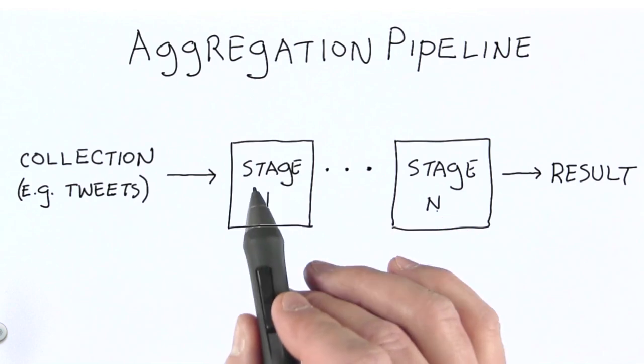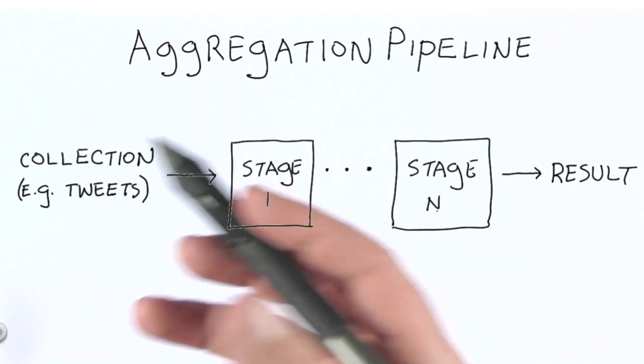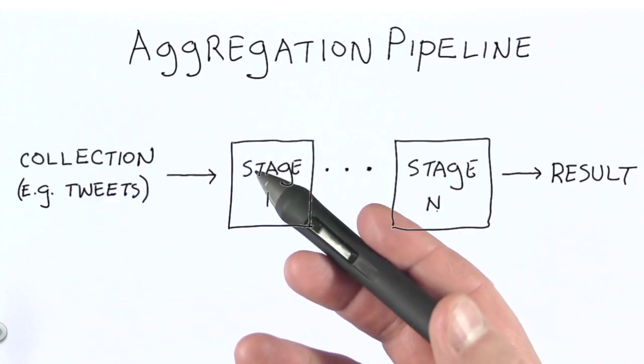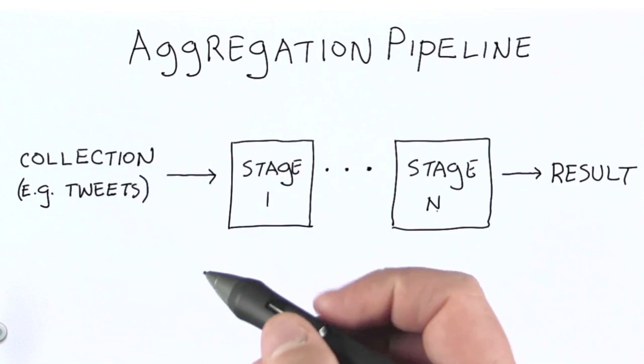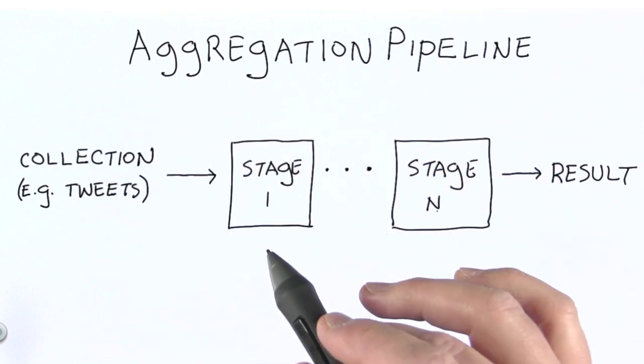An example we looked at in the previous lesson included a group stage and a sort stage. It's the group stage that actually does the aggregation. Let's take a look at a pipeline specific to that example.